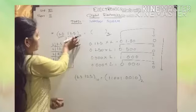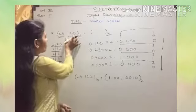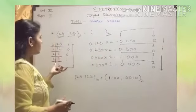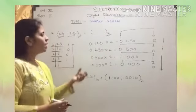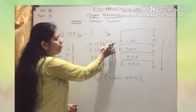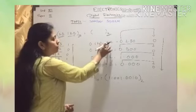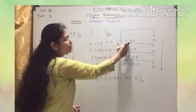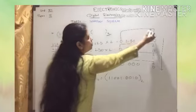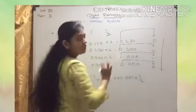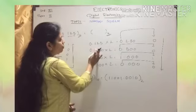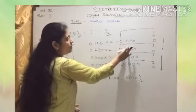Then we have to convert the fractional part. In the integer part we divide by 2, but in the fractional part we multiply by 2. So we multiply 0.125 by 2 and get 0.250. The integer part here is 0. Then we take the fractional part 0.250 and multiply by 2 to get 0.500.